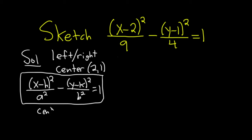So the center is h, k. Basically we're just switching the sign. Because it's x minus h, so it's x minus 2, h is 2. And then it's y minus k, so it's y minus 1, and k is 1. So you can just switch the sign to get the center.